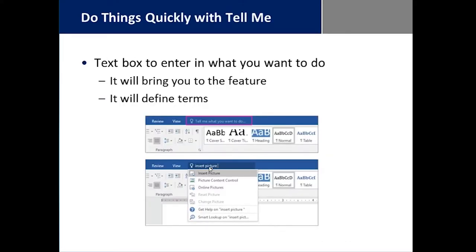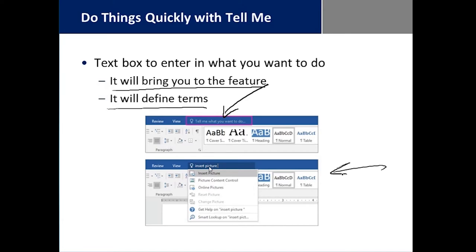We have an ability to do things quickly with a feature called Tell Me. Tell Me allows you to go into a little text box and tell it exactly what you want to do. It will either bring you right to the feature or define the term. For example, if you want to insert a picture, it automatically brings you to Insert Picture and highlights the choice in the menu so you can take it from there.